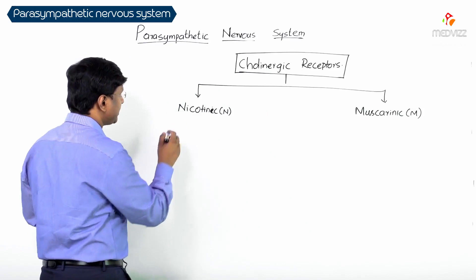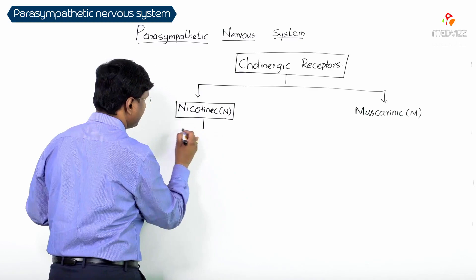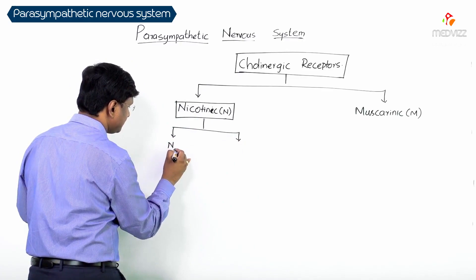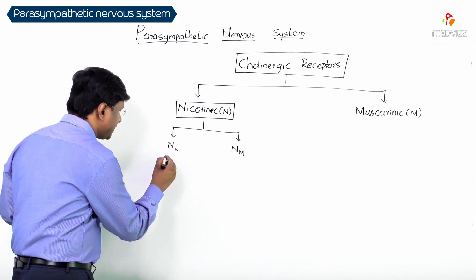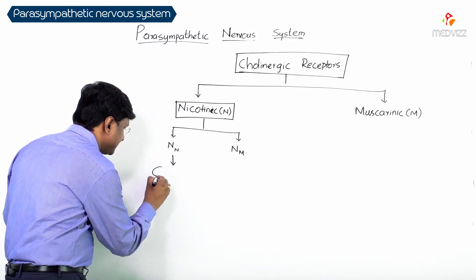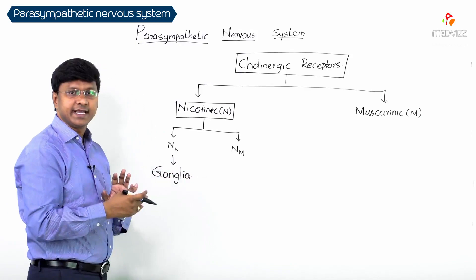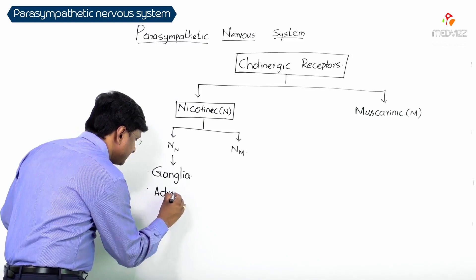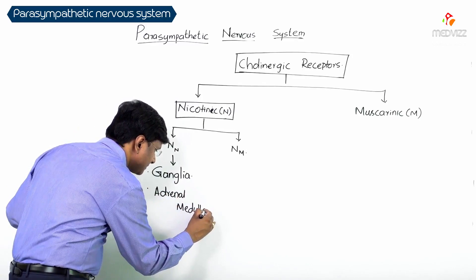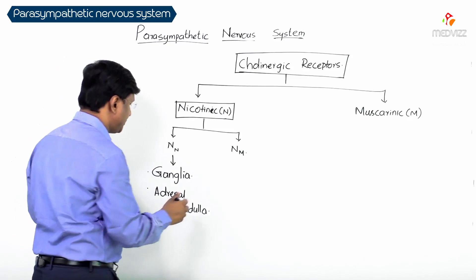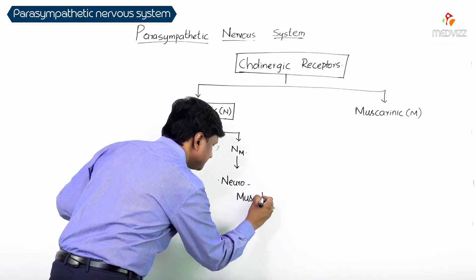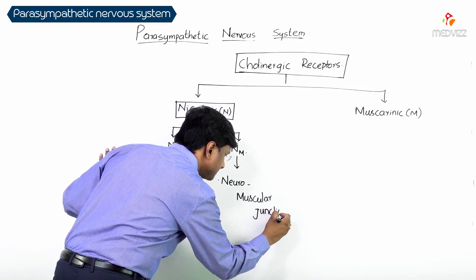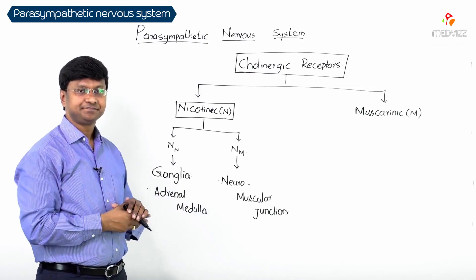Nicotinic receptors are again of two types: NN and NM. NN receptors are present in the ganglia and also in the adrenal medulla. NM receptors are present at the neuromuscular junction.